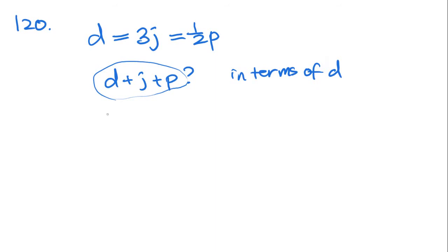So D plus D over 3 plus, if D equals half P, then P must equal 2D. 2D equals what? Let's multiply this by 3 over 3 and this by 3 over 3 to get 6D and add them together. 10D over 3. And that is answer choice C.